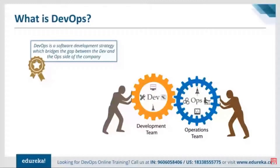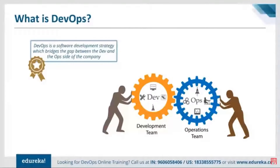There are a lot of conflicts between the two teams. For example, the software works on the developer's laptop but doesn't work in the test or production environment. Similarly, the dev team wants agility whereas the ops team wants stability. DevOps resolves these conflicts by bringing together the dev and the ops side of the company.